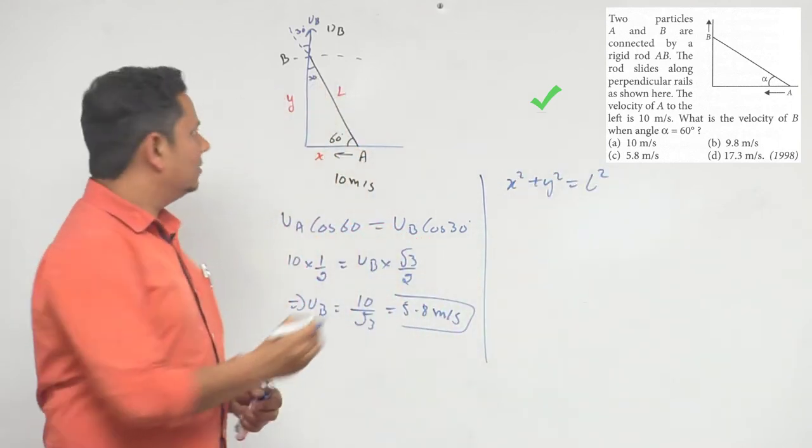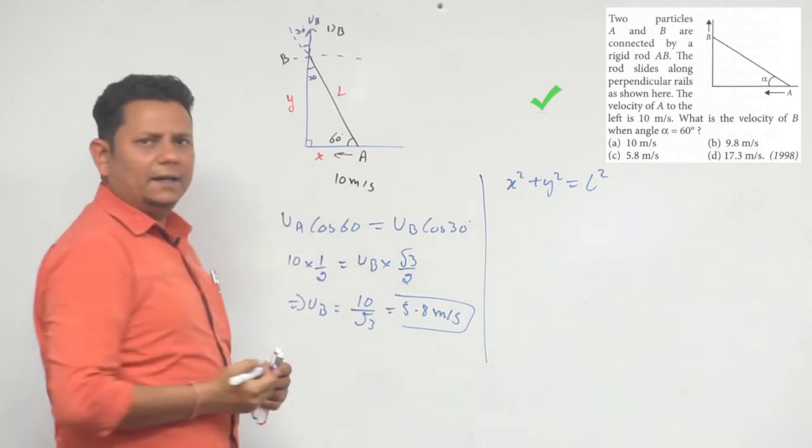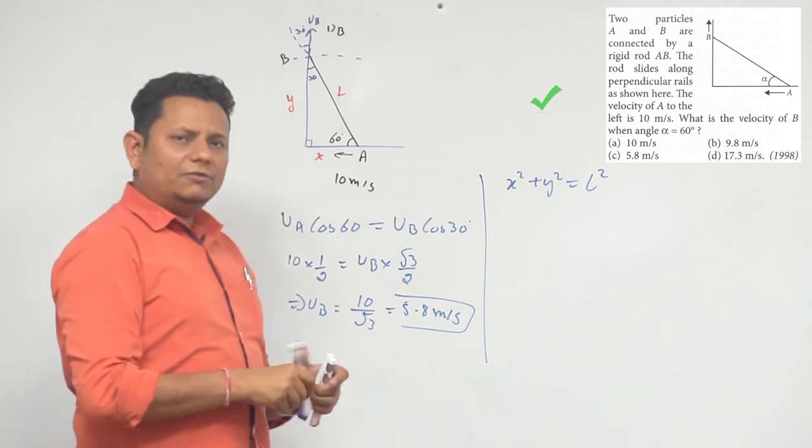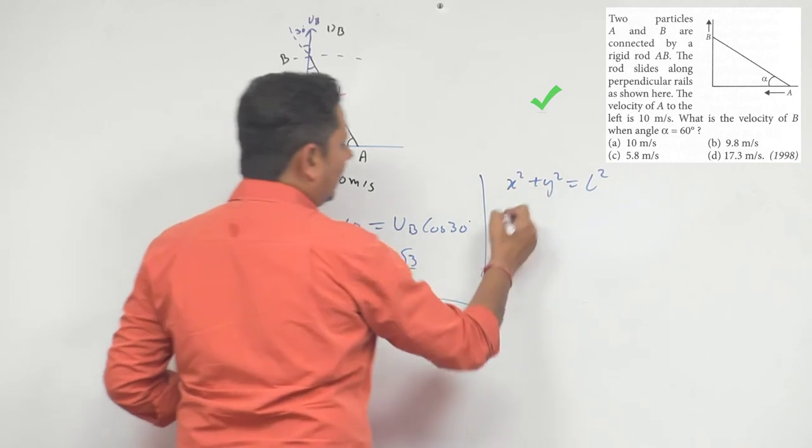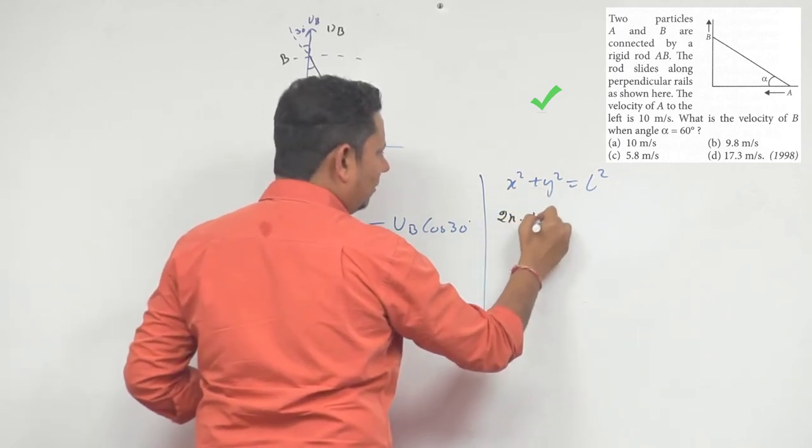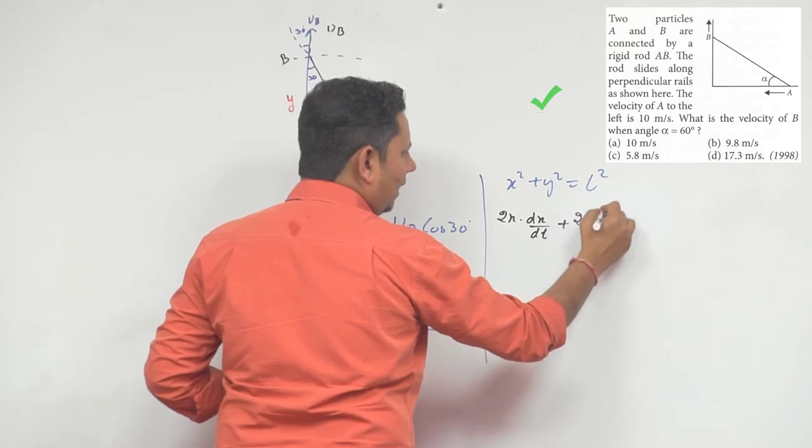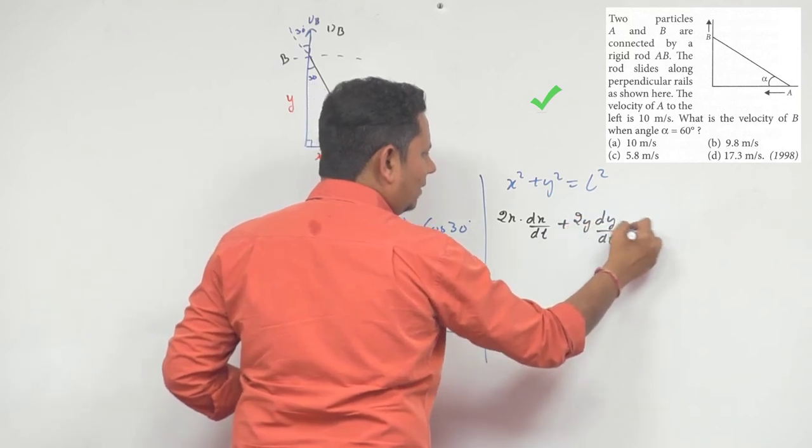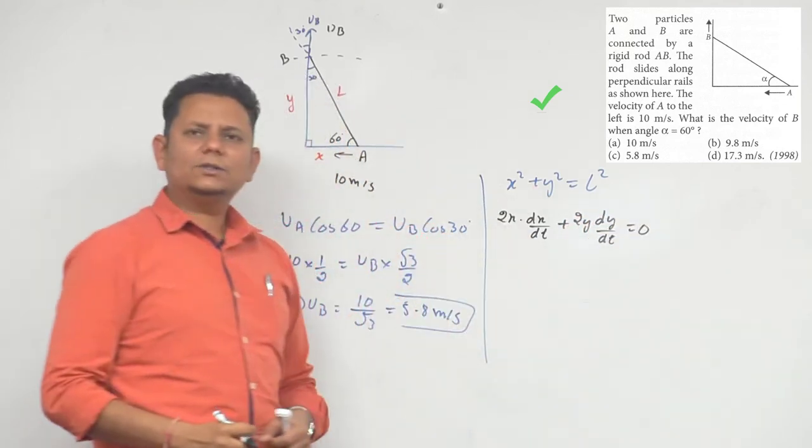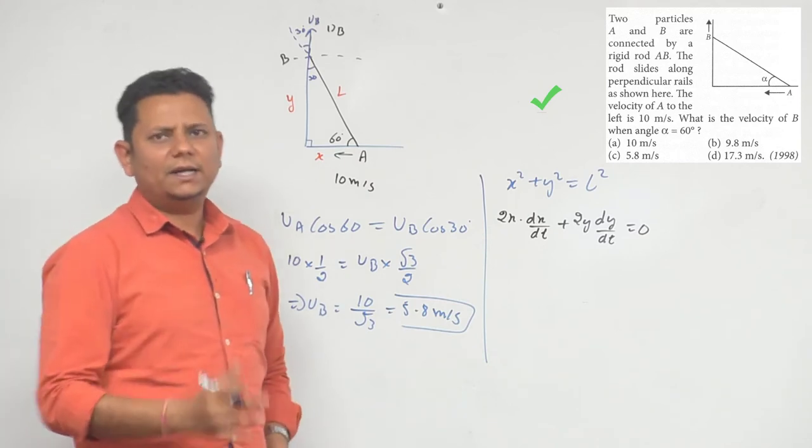Because this is a 90 degree angle. If we differentiate, then we can write 2x multiplied by dx/dt plus 2y dy/dt equals 0. Because length is constant, the differentiation of a constant is zero.